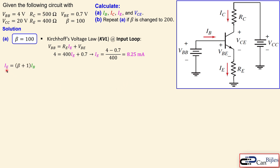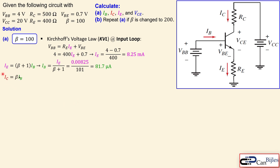In the linear region, the emitter current equals (beta + 1) times the base current. So the base current can be calculated from the emitter current. Substituting beta equal to 100, we get 100 over 101 in the denominator, giving IB equal to 81.7 microamps. The collector current is then beta times IB, which gives 8.17 milliamps.